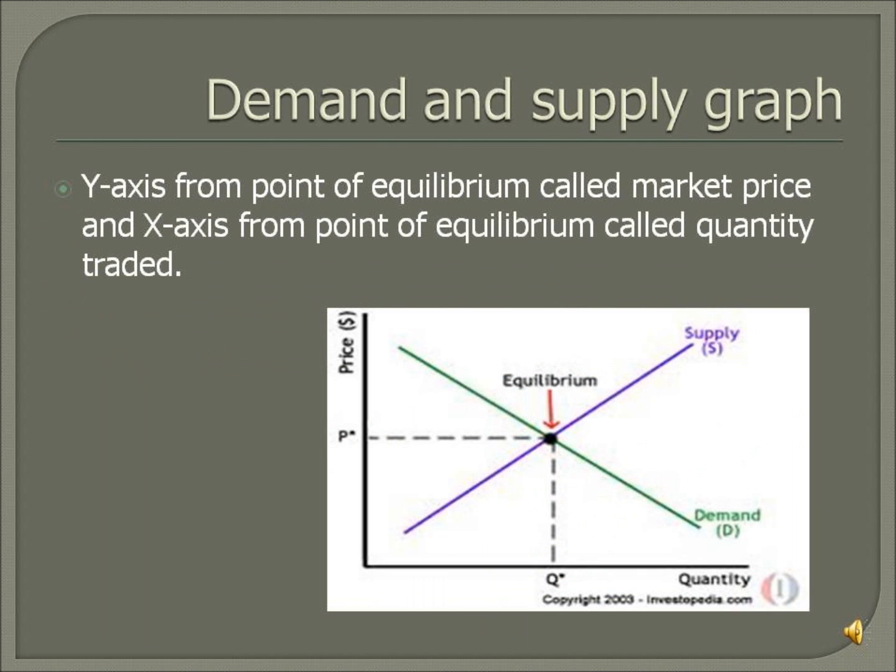Demand and supply graph. The Y axis from the point of equilibrium is called market price, and the X axis from the point of equilibrium is called quantity traded.